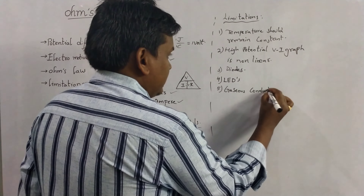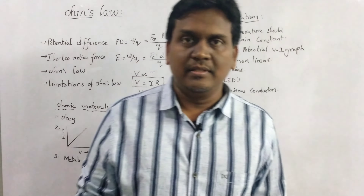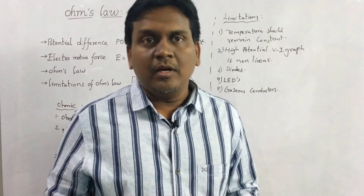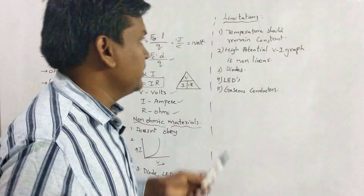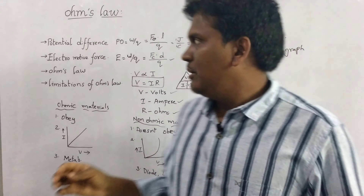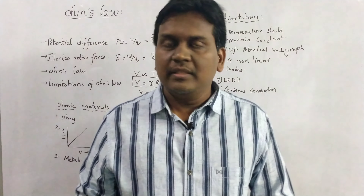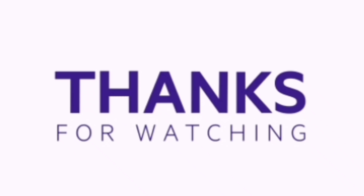Now coming to the limitations of Ohm's law. First, for Ohm's law, the temperature should remain constant. Only at constant temperature will Ohm's law be valid, meaning V and I will be directly proportional when temperature remains the same. If the temperature changes, there will be some variations between potential difference and current.